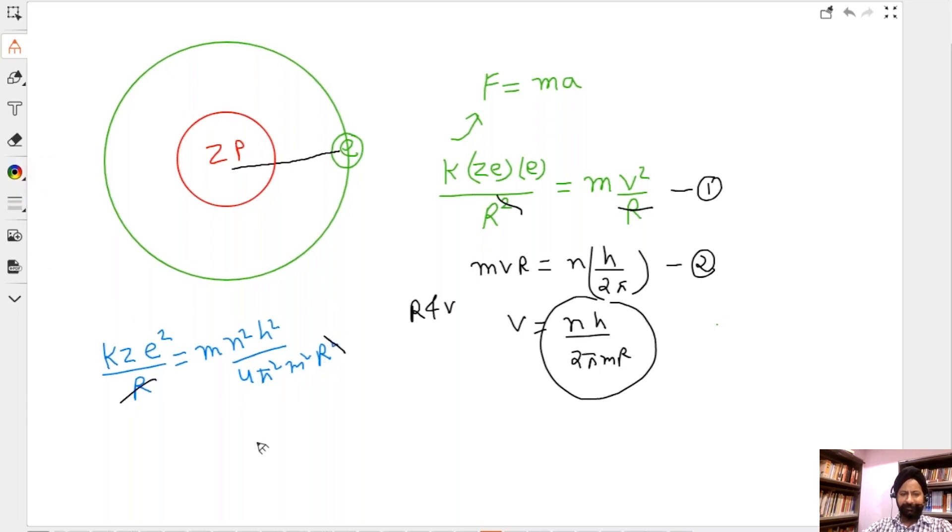So I'm getting, what I don't know, r, right? I'm getting r is equal to, if anything else crosses out, let me know. m, n square h square, one of the masses also crosses out, right? So let's not write mass there. So this crosses out, this. So n square h square by 4π square m k z e square.